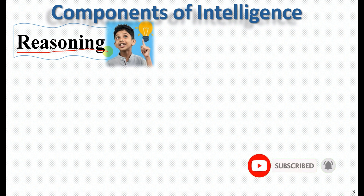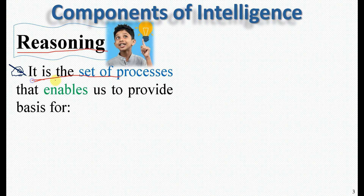We have our own reasoning — reasoning intelligence. What does that mean? It is a set of processes that enable us to provide and reason through things.